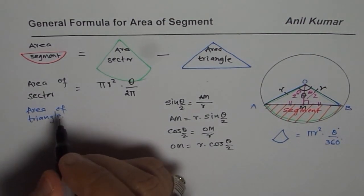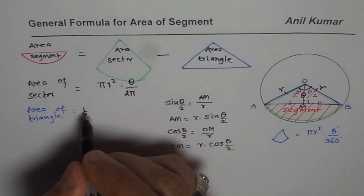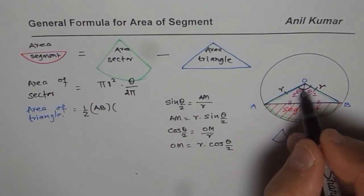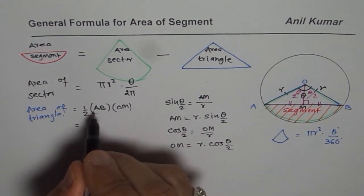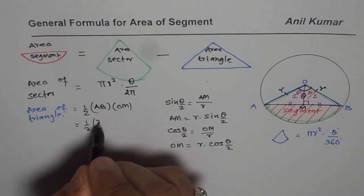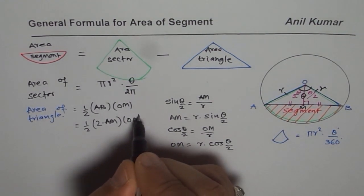So area of triangle will be half ab, which is the base, times om, which is the height. Now ab is 2 times am, 2 times am times om.